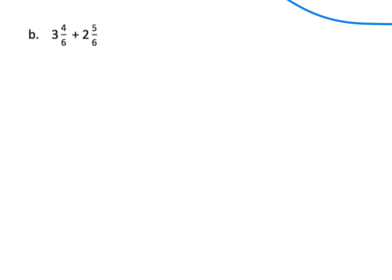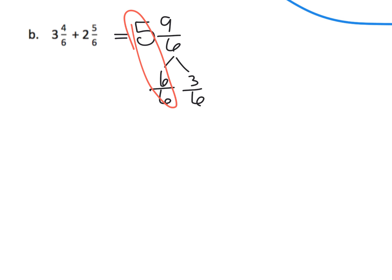We're going to start off with — we know that three wholes plus two wholes equals five, and then four sixths plus five sixths gives us nine sixths. We're going to decompose nine sixths, because that's a fraction greater than one, and that decomposes to six sixths and three sixths. Six sixths is our one whole, so plus five wholes gives us six wholes and three sixths left over.